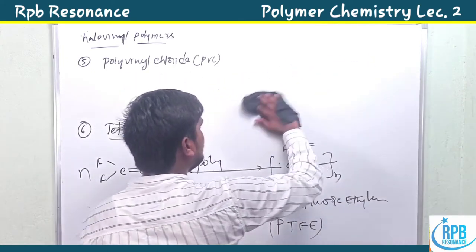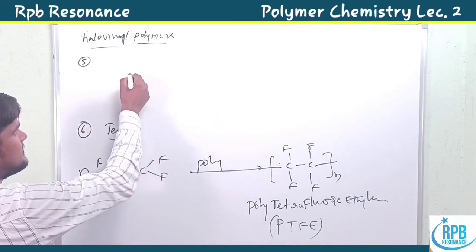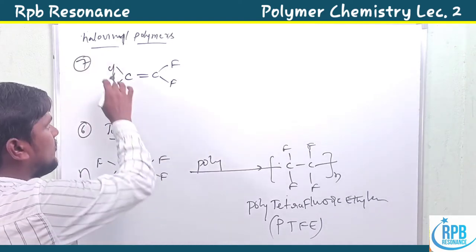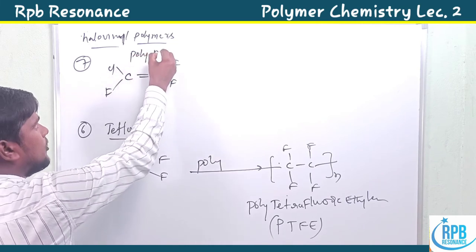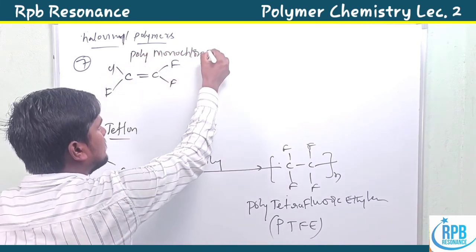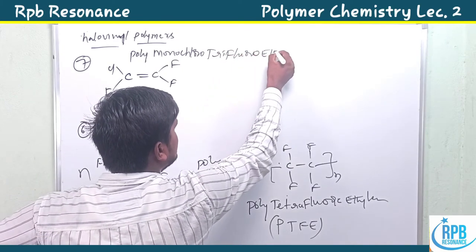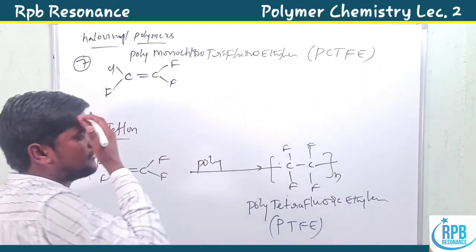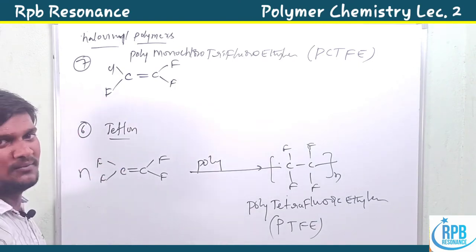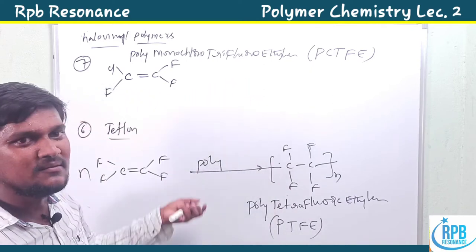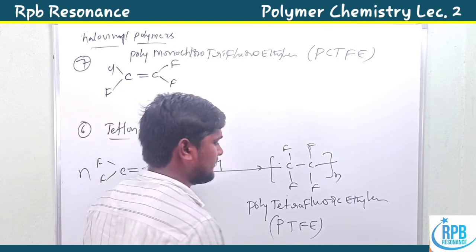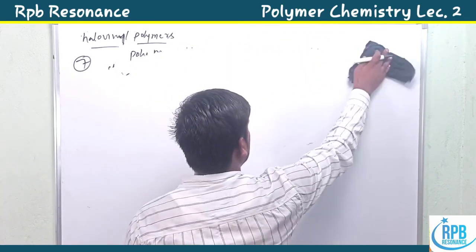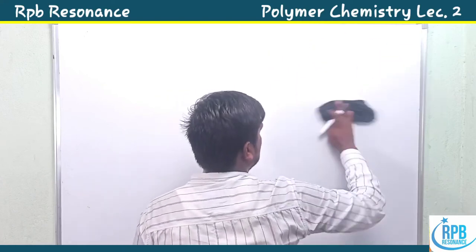Another halo vinyl polymer is polychlorotrifluoroethylene (PCTFE), where one chlorine and three fluorine atoms are present on the ethylene monomer (CF₂=CFCl). This produces PCTFE, which has similar kinds of properties to PTFE. These cover the halo vinyl polymers.